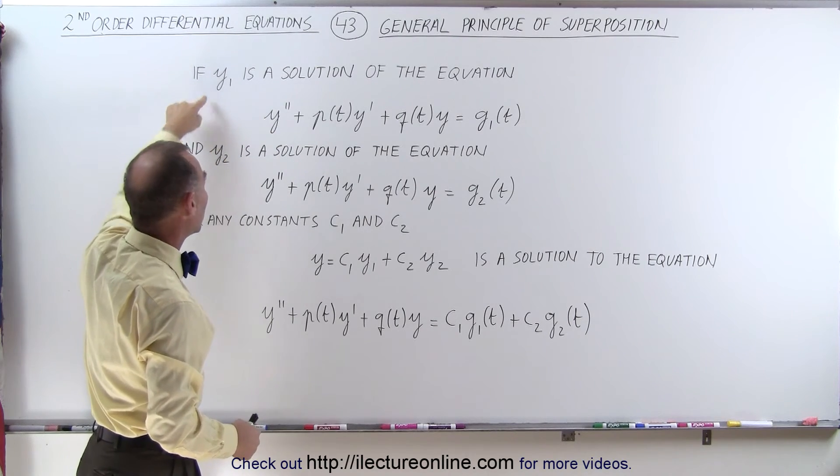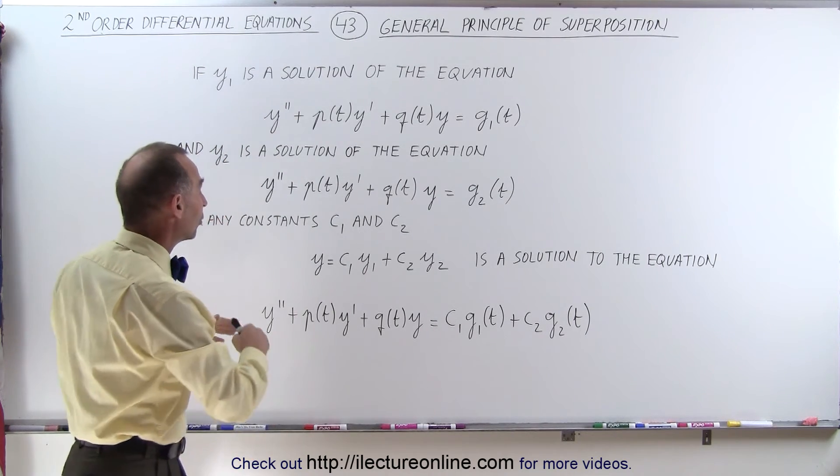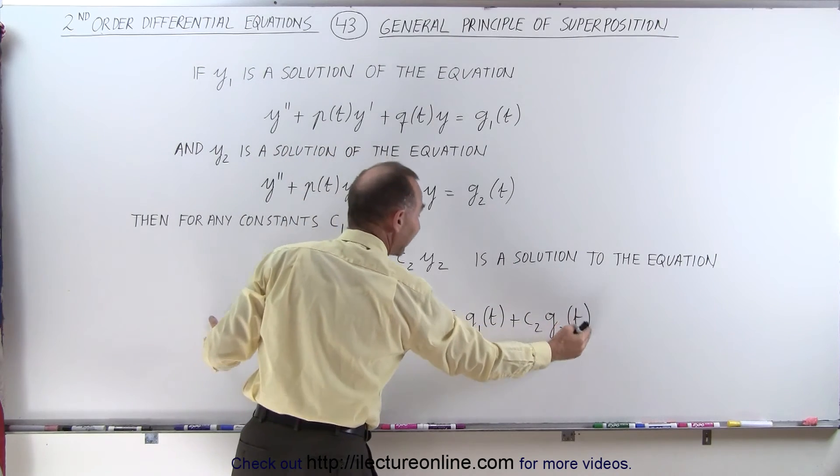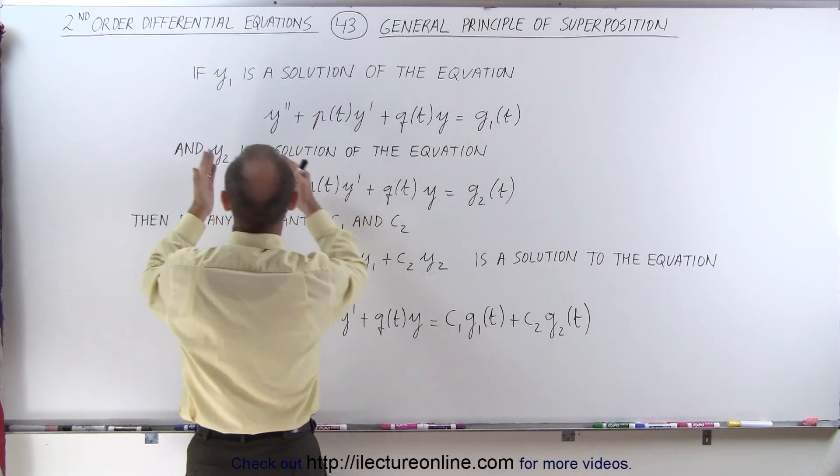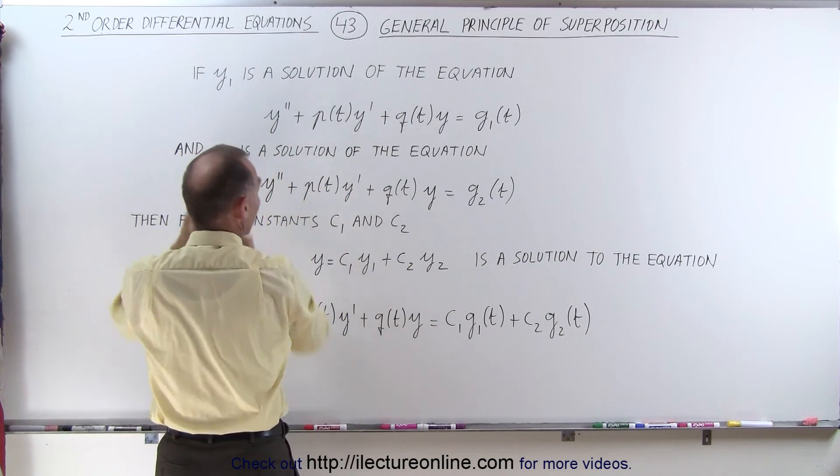just like we did, we have a y1 and a y2, and then to find the total solution of an equation like this, we simply add the two solutions together, y1 plus y2,